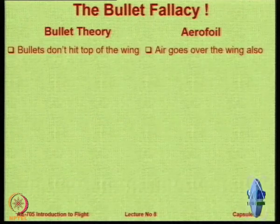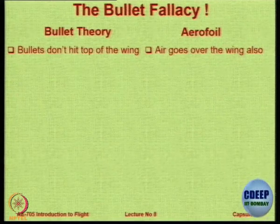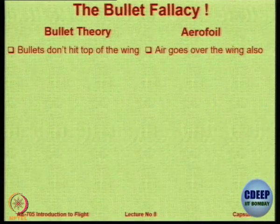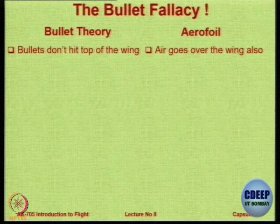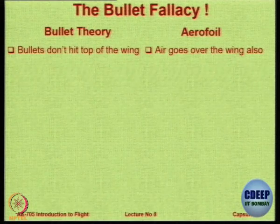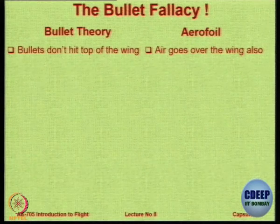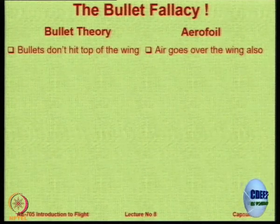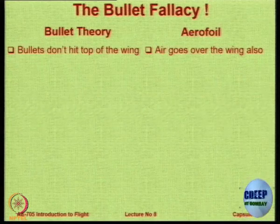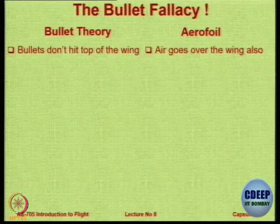The first scenario: in this example the bullets do not hit above the wing, they go above the wing. Therefore, according to this theory, the particles which flow just above the aerofoil should not be disturbed — they should go straight. But we have seen that the particles flowing above the wing do not go straight; they also bend down. The particles that go below the wing bend down, those above the wing also bend down, and only particles very far away do not bend down. So this is one place where the bullet theory fails.